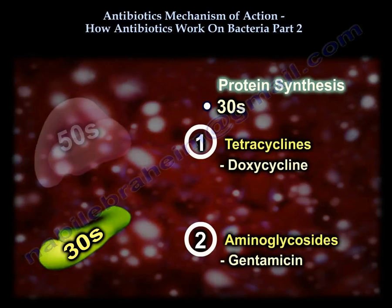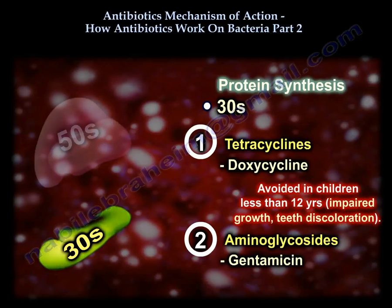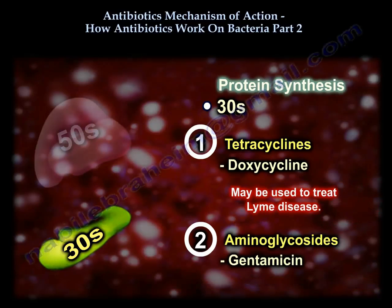The 30S subunit inhibitors include doxycycline and aminoglycosides like gentamicin. Aminoglycosides give problems in the ears and kidneys: ototoxicity and renal toxicity. The other 30S inhibitor is tetracycline, which is avoided in children under 12 because it can impair growth and cause teeth discoloration. Doxycycline is very important because we use it to treat Lyme disease.